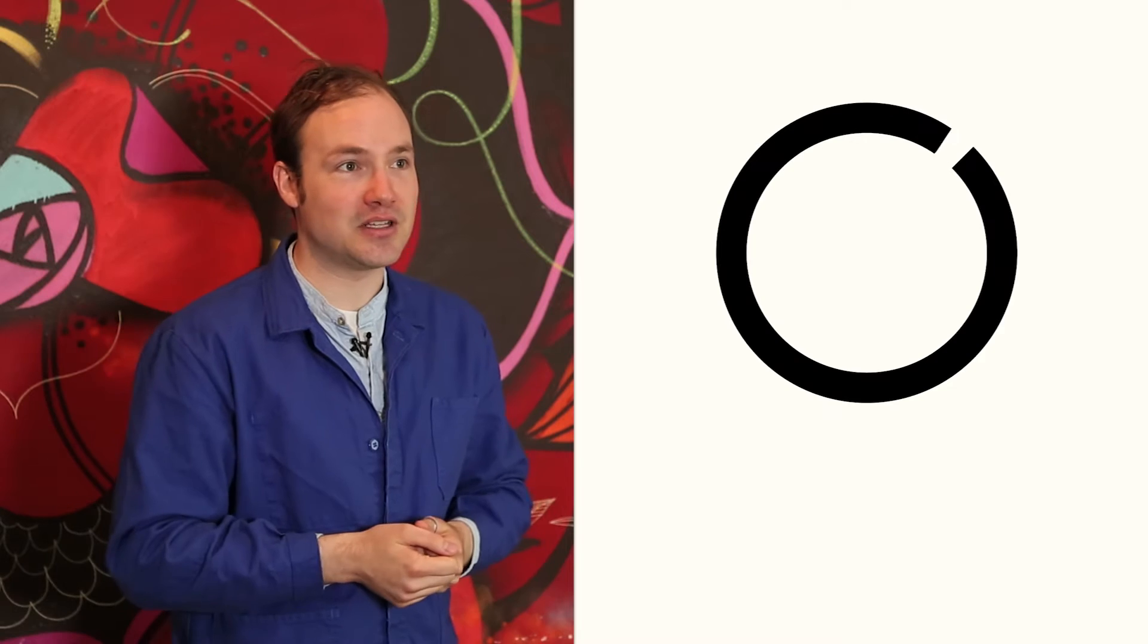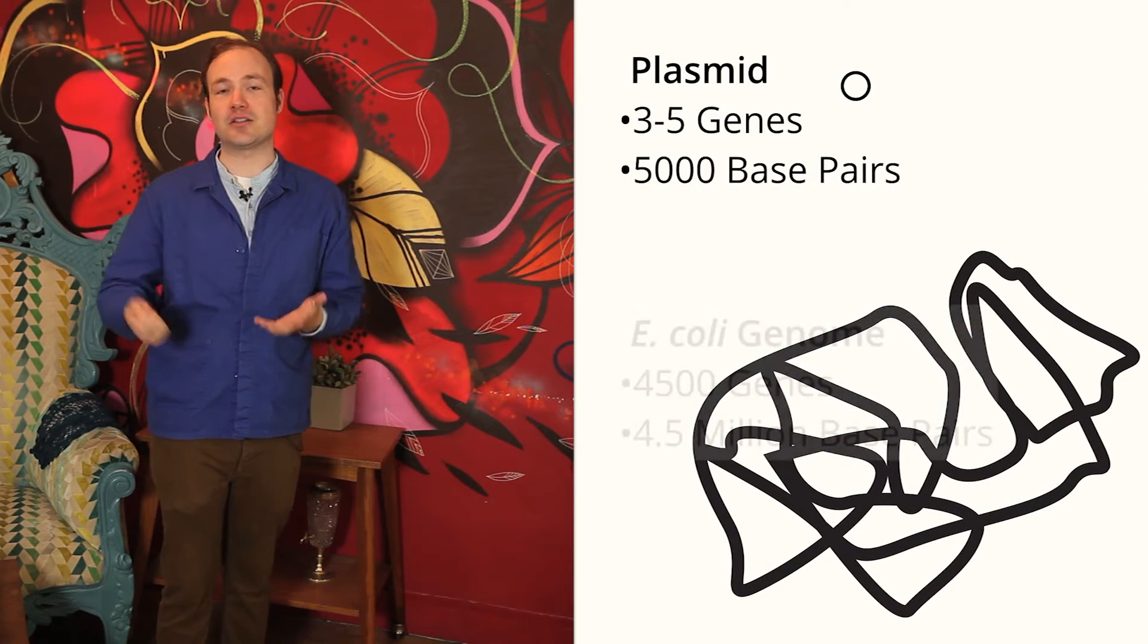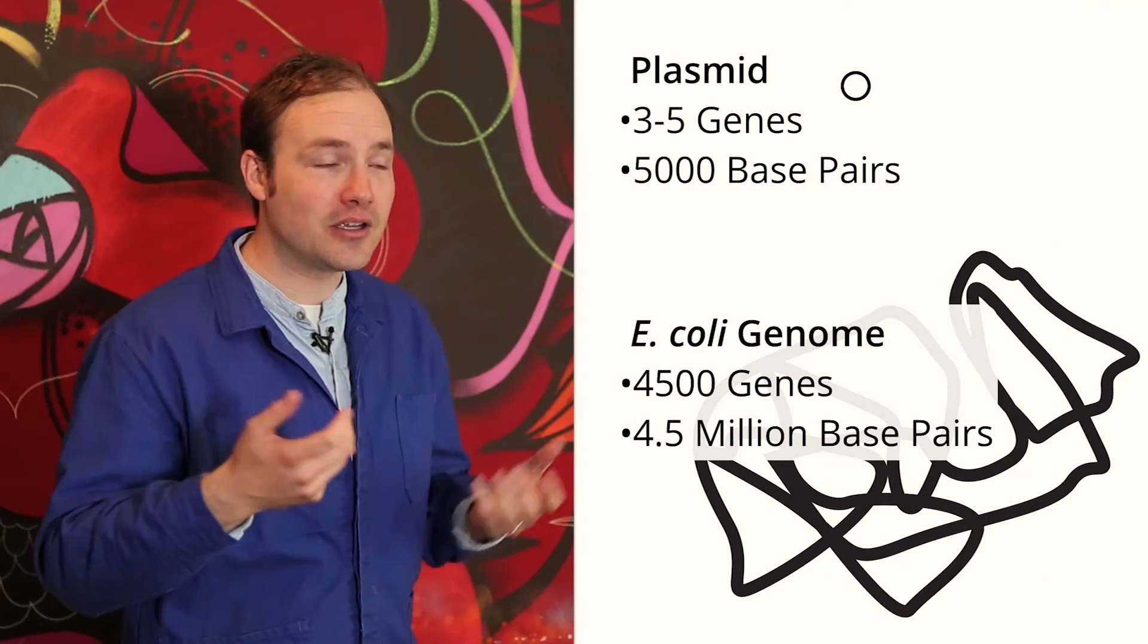A plasmid is a circular piece of DNA. A typical plasmid might be 5,000 base pairs long. In comparison, the genome of a bacterium like E. coli is over 4,000,000 base pairs long.